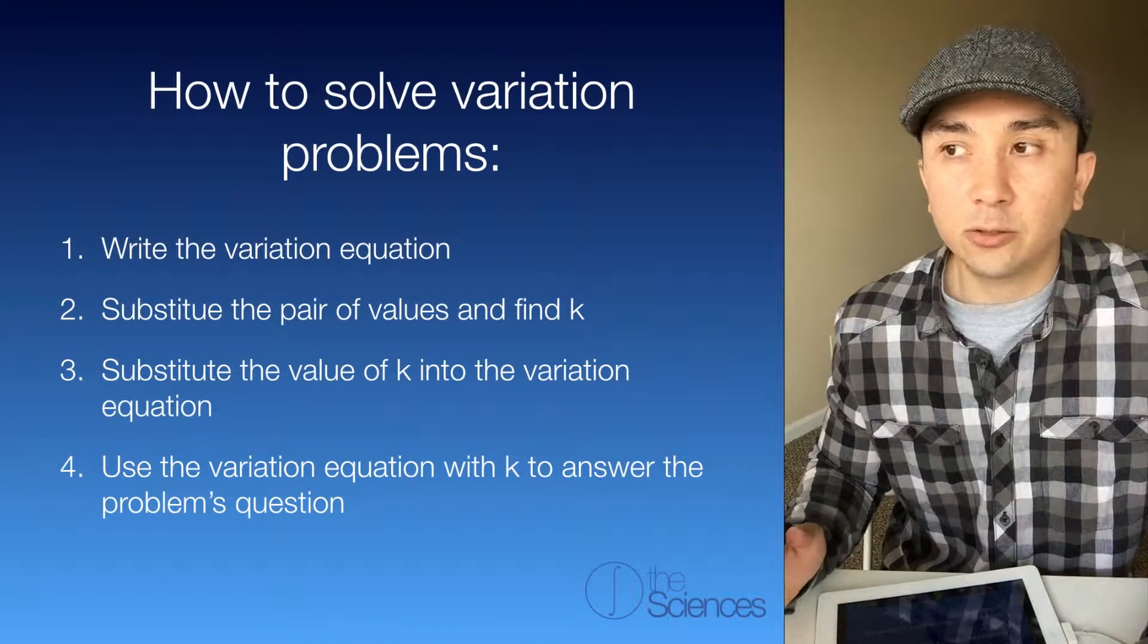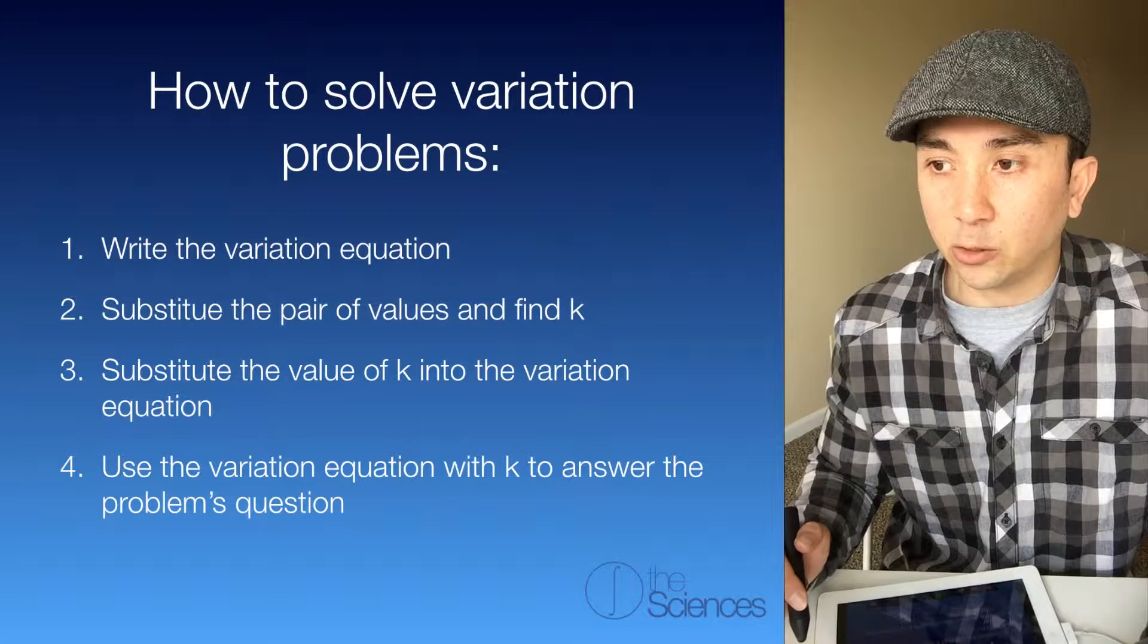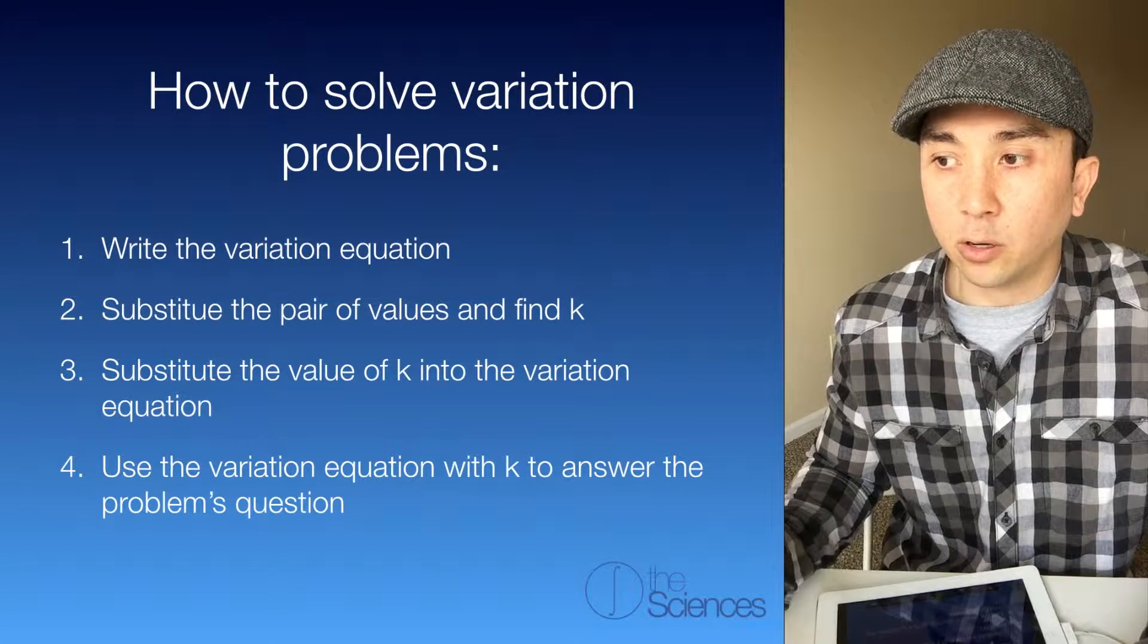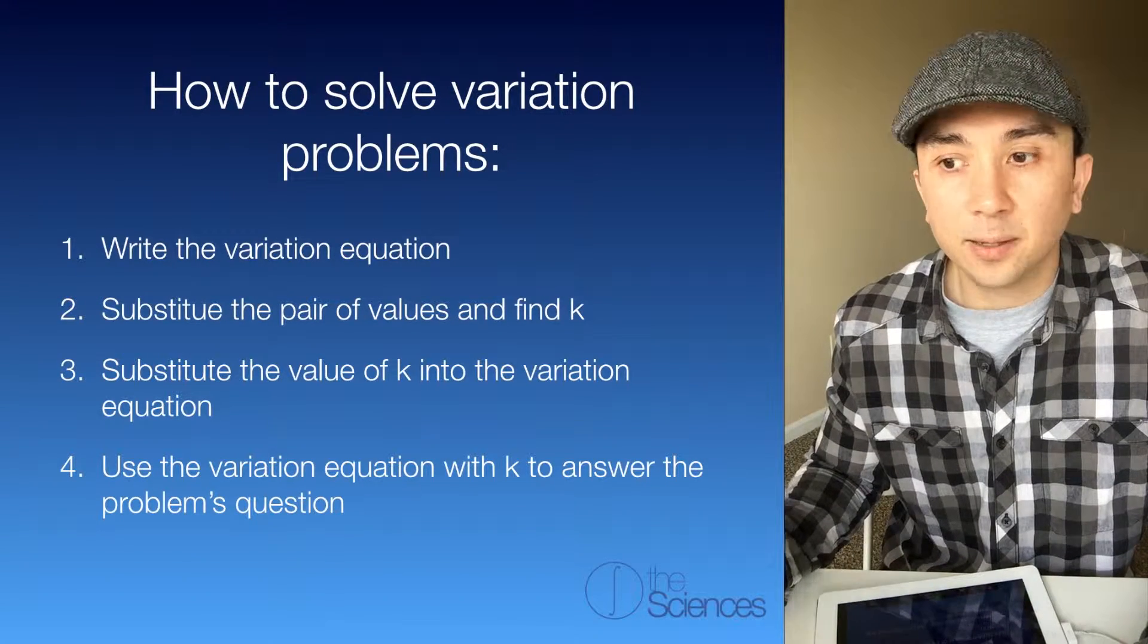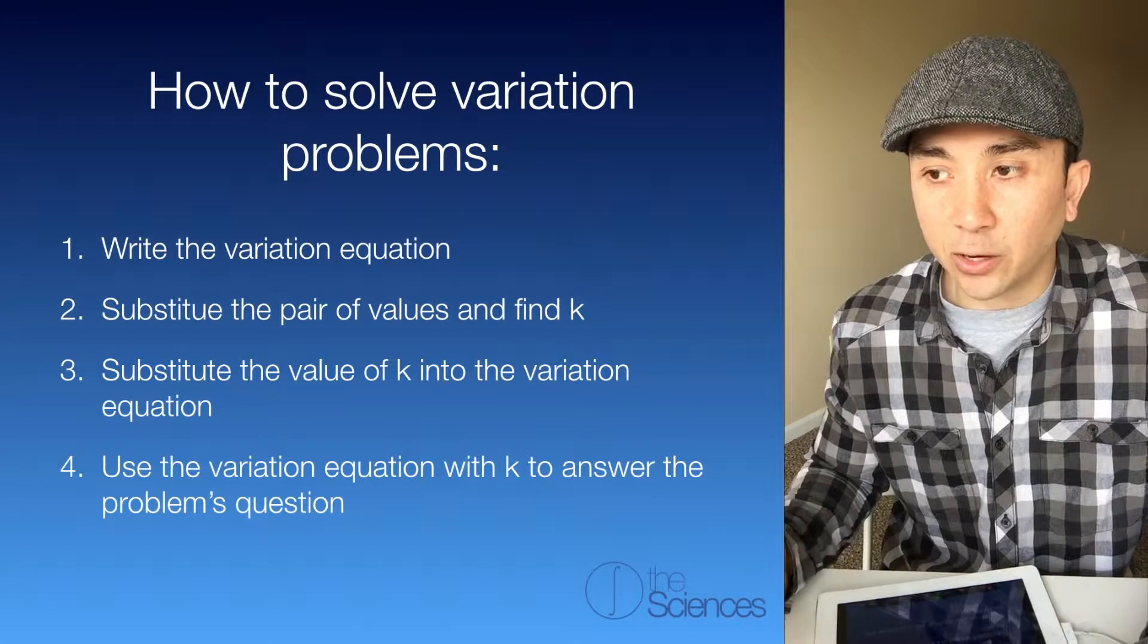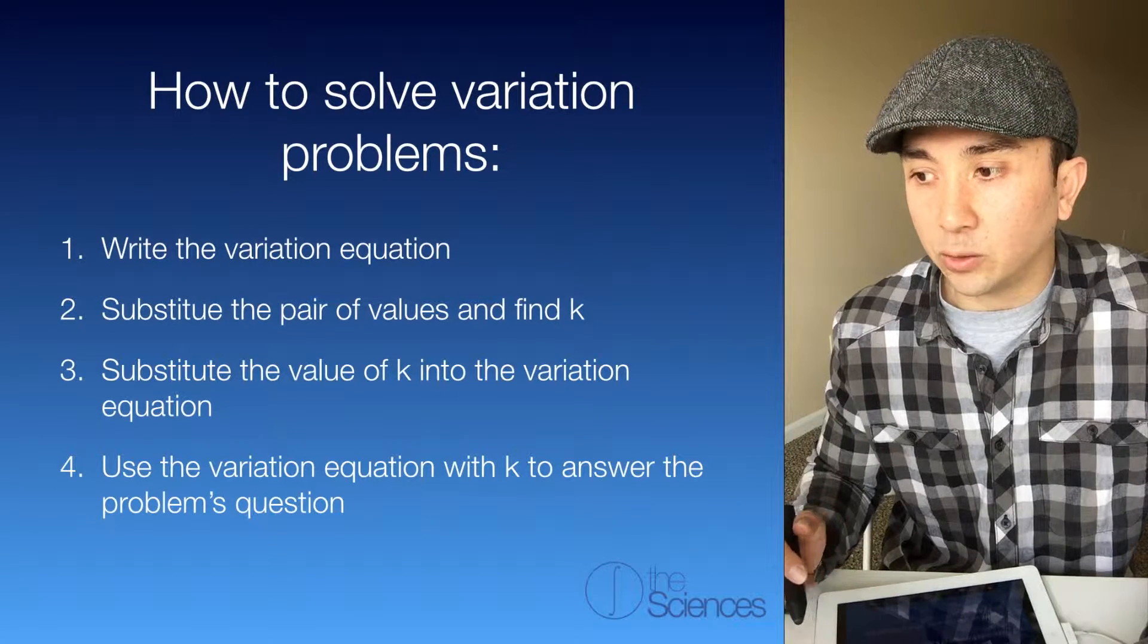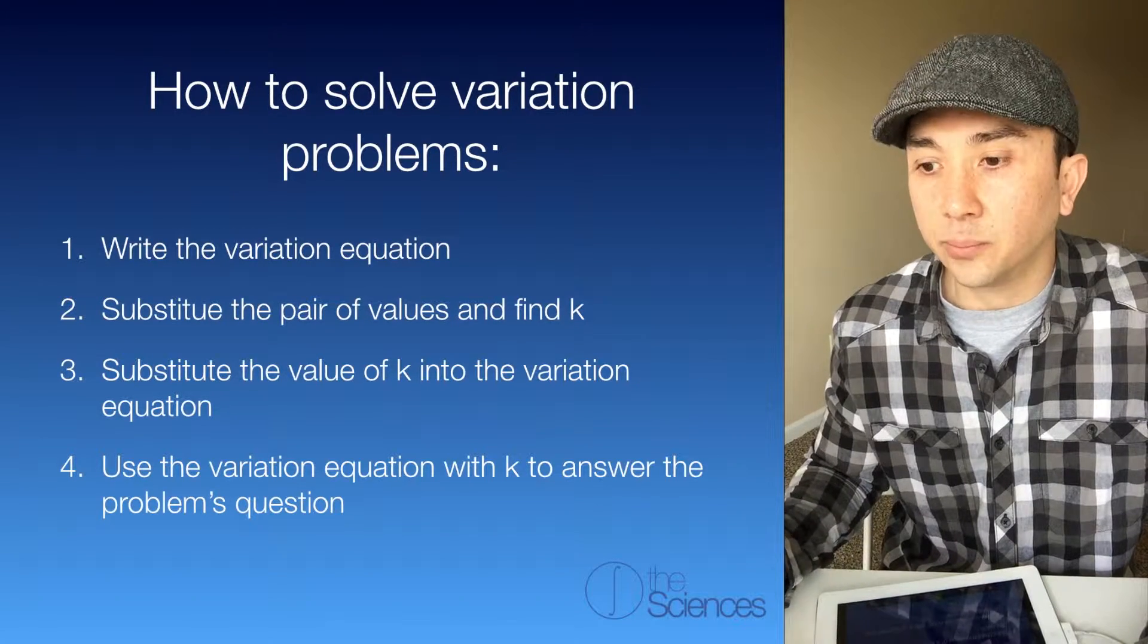Here's how to solve variation problems. First you're going to write the variation equation. Then you're going to substitute the pair of values and find k. Then substitute the value of k into the variation equation. And then use the variation equation with k to answer the problem's question.